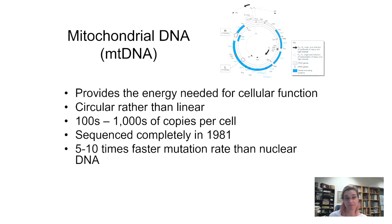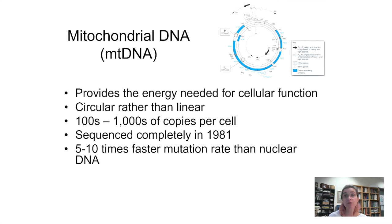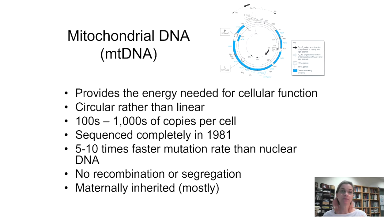Mitochondrial DNA also mutates at a much faster rate than nuclear DNA, in large part because it's in the cytoplasm rather than in the protected nucleus. We were able to completely sequence the mitochondrial DNA in 1981 because it was so much easier to sequence. If you want to understand ancestry events that happened more recently in time, you need mutations, and mitochondrial DNA will have them, whereas nuclear DNA is much more stable.